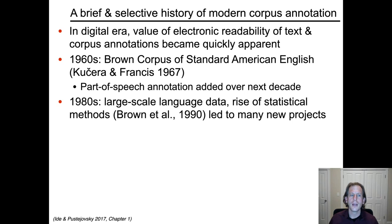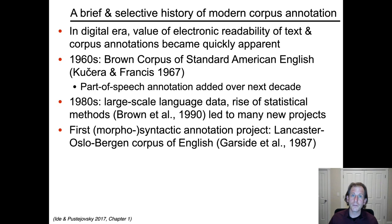During the 1980s, with larger-scale language data becoming available, more computational power, and the rise of statistical methods in the later part of the decade, many new uses became recognized for corpus annotation and there were many more annotation projects. The first morphosyntactic annotation project was probably the Lancaster Oslo Bergen Corpus of English, but soon after that followed the Penn Treebank.